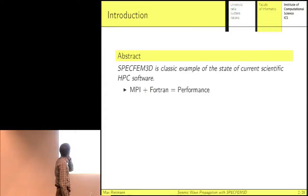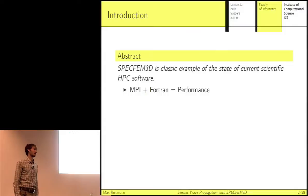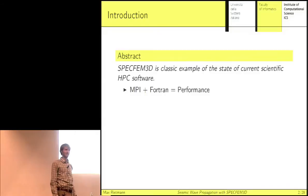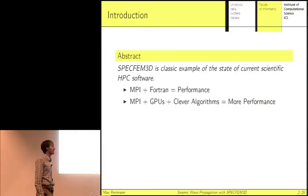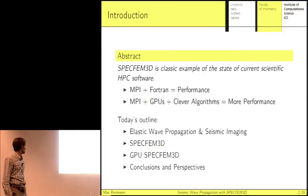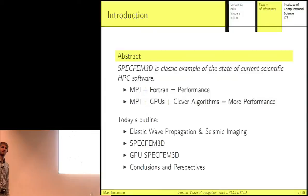I'm going to give a little introduction on SPECFEM3D and talk about it as a classic example of a current scientific code that runs on a big HPC cluster. I'll discuss the idealism of MPI with Fortran on a big cluster — you get great performance assuming you use the right algorithms. Then I'll talk about how we get more performance out of the code by adding GPUs, maybe better algorithms, and also why we need more performance. I'll cover the elastic wave equation, seismic imaging, introduce SPECFEM3D, talk about the GPU version, and give my conclusions.